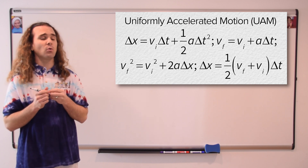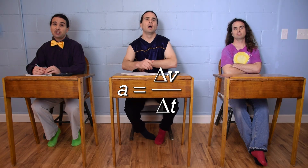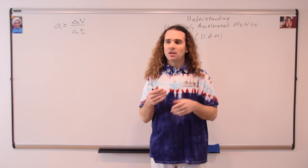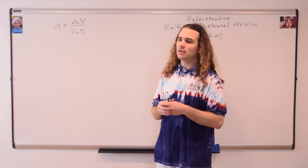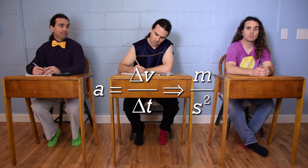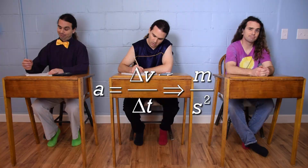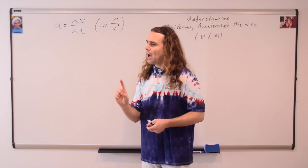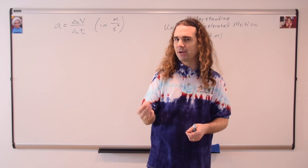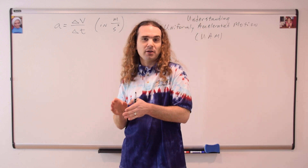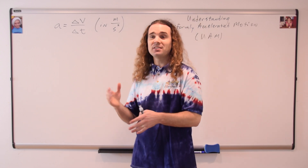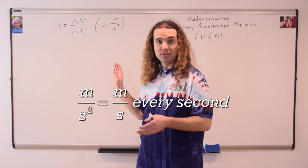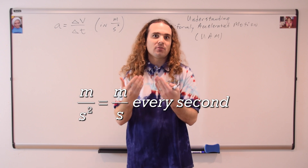Billy, what is the equation for acceleration? Acceleration equals change in velocity over change in time. Correct. And Bo, in base SI units, what are the dimensions for acceleration? Meters per second squared. Also correct — we've learned that acceleration is in meters per second squared. However, I find that students better understand what uniformly accelerated motion means when instead of using meters per second squared, we use meters per second every second, which is the same thing, but it's what acceleration means.